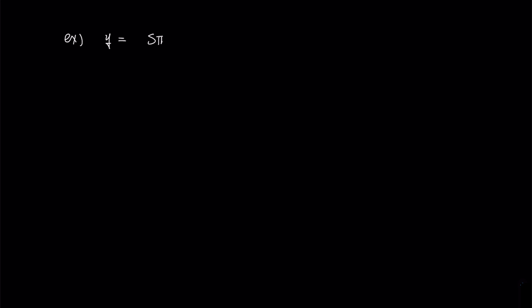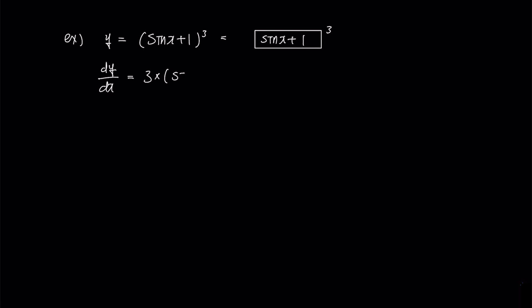Let's look at another example to practice multiplying with the box prime before we move on to implicit differentiation. In this problem, we have y equals sine x plus 1 to the power of 3, and the box contains sine x plus 1. To find dy over dx, we first bring down the exponent 3 and decrease it by 1 to get 2. Then we multiply by box prime. Since we are differentiating with respect to x, box prime is d(box) over dx, so we multiply by the derivative of sine x plus 1, which is cosine x. This is a way to differentiate quickly without using the chain rule, and applying this method to implicit differentiation makes the problems even easier.